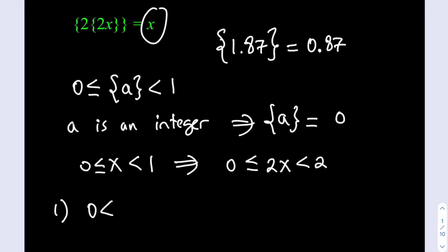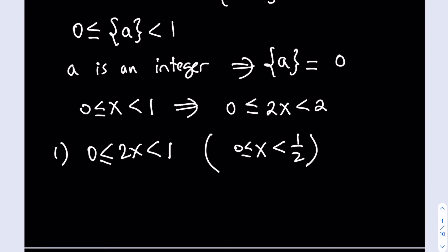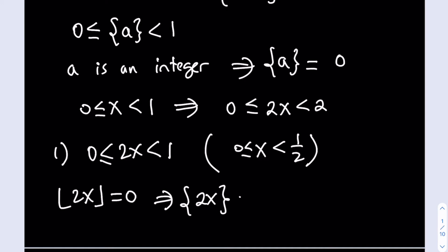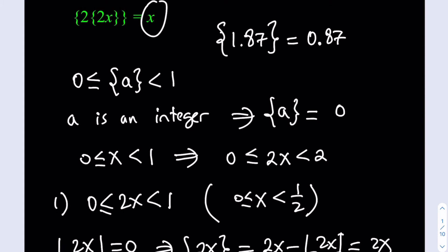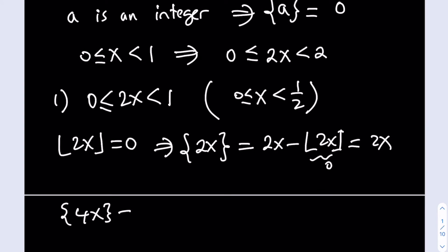Case 1: if 2x is between 0 and 1, meaning x is between 0 and 1/2, then the floor value of 2x is 0. So the fractional part of 2x equals 2x minus 0, which is just 2x. Plugging that into our equation gives us: the fractional part of 2 times 2x, so the floor value of 4x equals x.